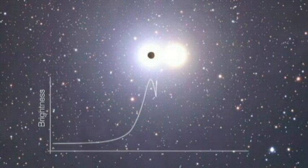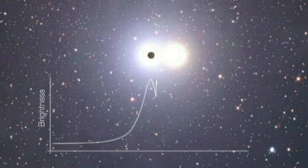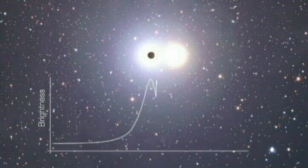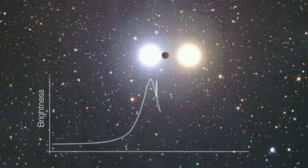But if by chance the closer star is accompanied by an unseen planet, the farther star's brightness will increase a second time as the planet passes in front of it. By watching for this distant star's brightness to intensify twice, astronomers can find out whether the closer star has a planet traveling with it.